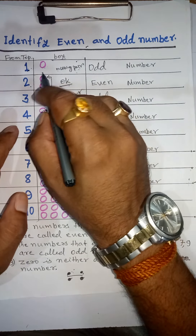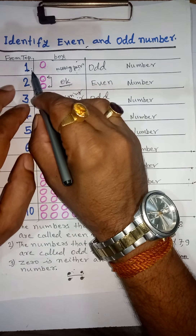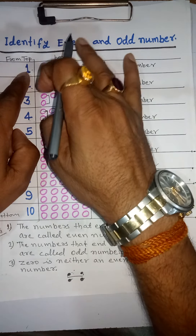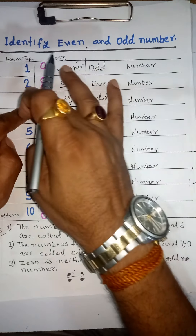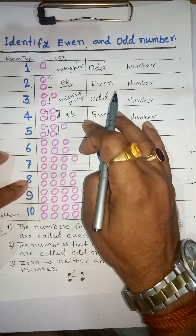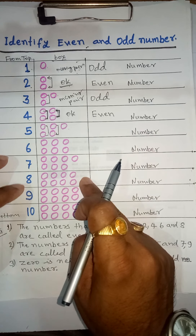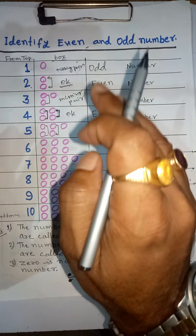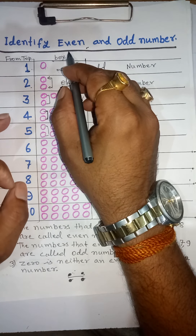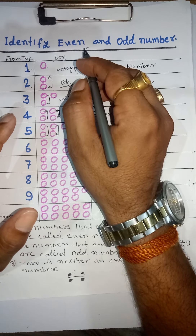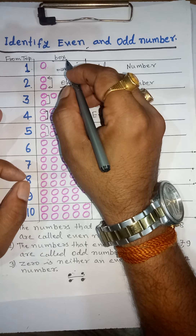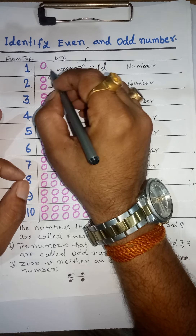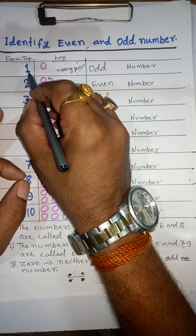Hello kids, today we are going to learn to identify even and odd numbers. To learn this, I write counting numbers 1, 2, 3, 4, 5, 6, 7, 8, 9, 10 from top to bottom. Now we create boxes in front of each number. This is box in front of 1, box number 2 in front of 2, box number 3 in front of 3, and so on up to box in front of 10.